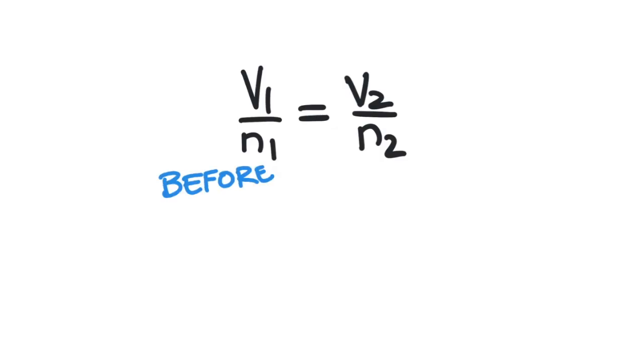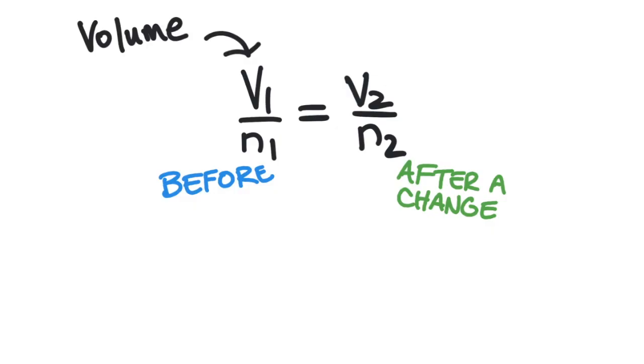The before conditions are represented by the ones, and then after some change occurs, the conditions are represented by the twos. The Vs stand for the volume of the gas, and the N stands for the amount of the gas, in units of moles.